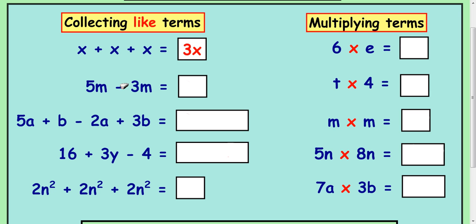In the next one, we've got 5 lots of m and we take away 3 lots of m. Again, an easy way to look at it is we've got 5 mice, you could say, take away 3 mice and you would have 2 left, so we'd write 2m.